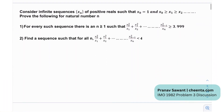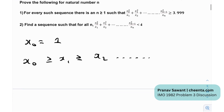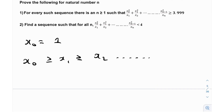The problem says: consider infinite sequences xn of positive reals such that x0 is 1. So the zeroth term, the beginning term, is 1, and all subsequent terms are less than or equal to that. So essentially x0 is the greatest, and then the subsequent terms are either equal or diminishing — those are the two possibilities.